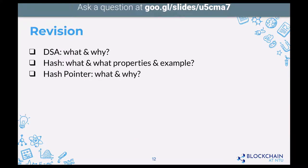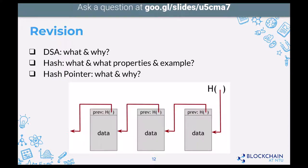Next: hash pointers — what they are and why we need them. The reason we use hash pointers is to solve the double spending problem. We solve it by putting transactions in order so we know which came earlier. In the digital world you can copy a coin however you want — it's just copy-paste. So to prevent spending the same coin to different people, we put transactions into an ordered log so that when something comes later, you can always refer back and there's no way to change the history without others noticing.